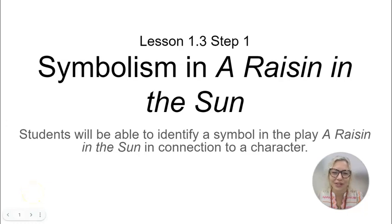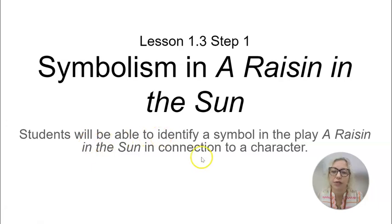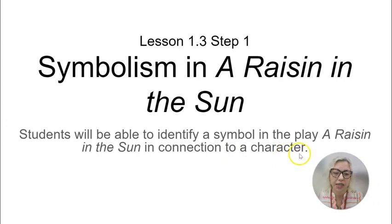Hey guys, it's 1.3 Step 1. Now that we've read a little bit of the play A Raisin in the Sun, it's time to look a little bit deeper into the meaning of the play. This lesson is about symbolism in A Raisin in the Sun. Our learning objective is students will be able to identify a symbol in the play A Raisin in the Sun in connection to a character.